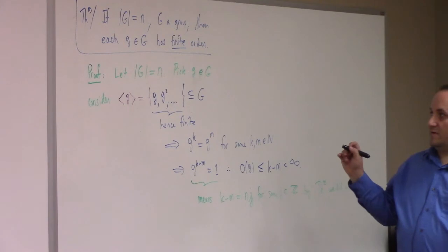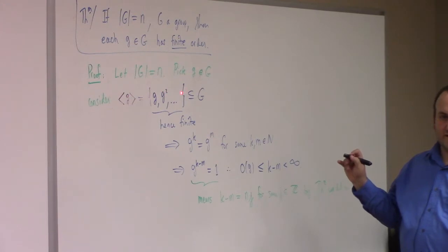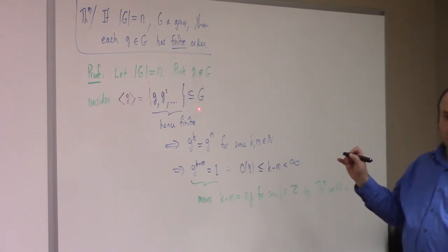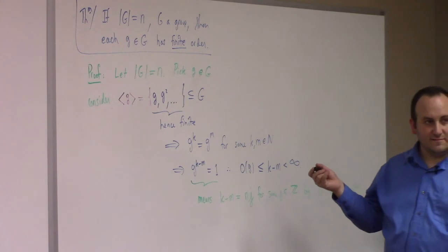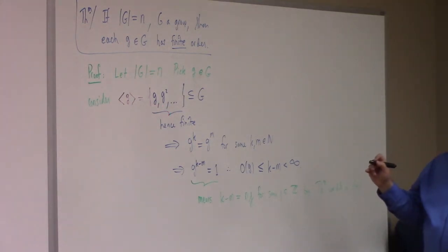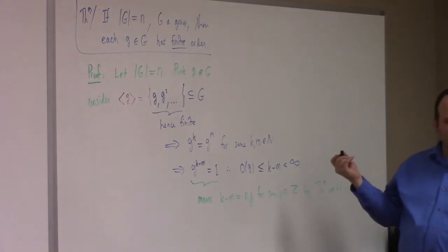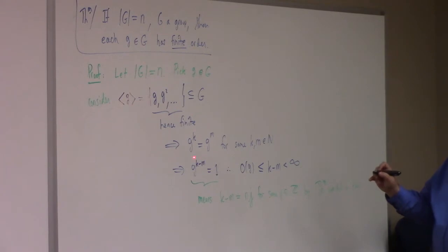All you do: you pick your element of the group, look at the set G, G squared, and so forth and so on. By closure of the group multiplication, that has to be a subset of G. Subsets of finite sets are finite, so it's finite, which means it has to eventually repeat. Haven't I shown you this argument before? Yes — this comes up in like four separate things, the same argument. But it's actually an important argument.